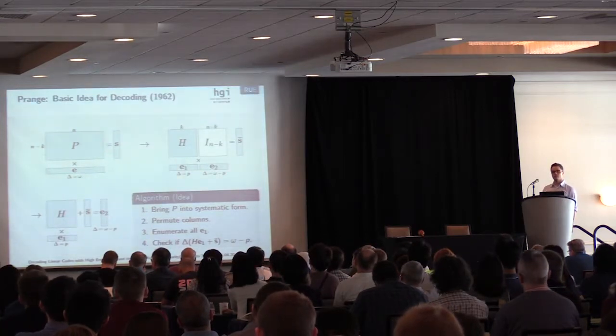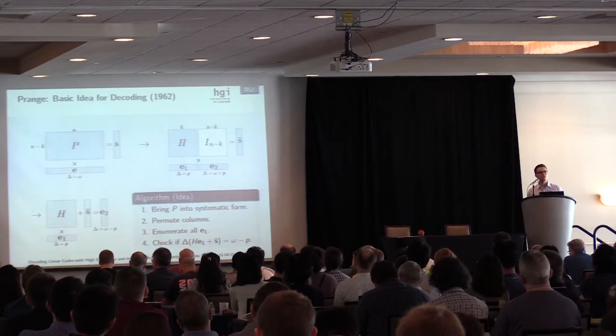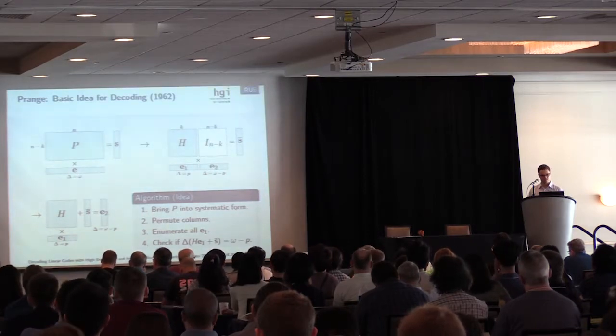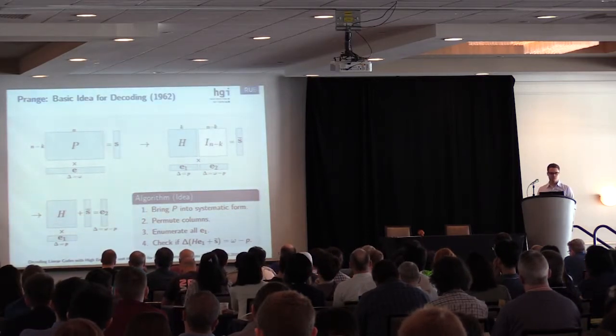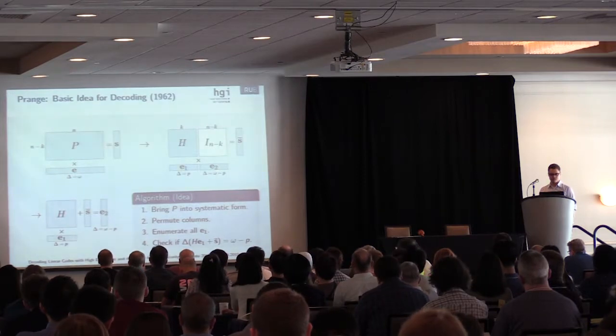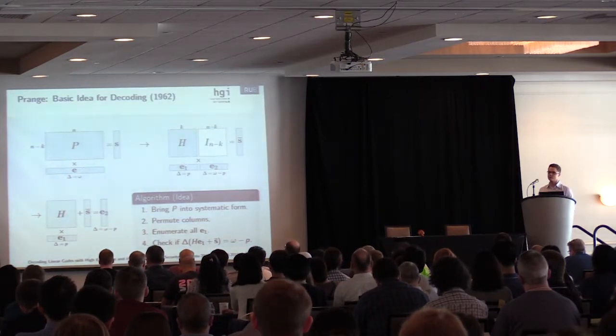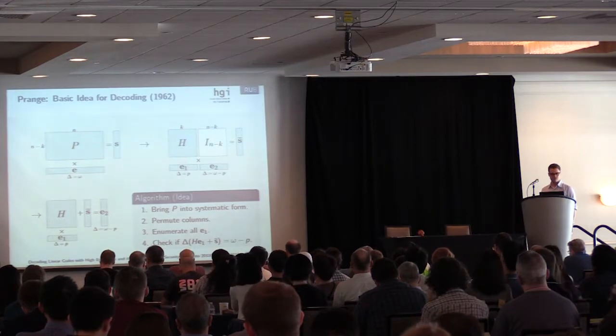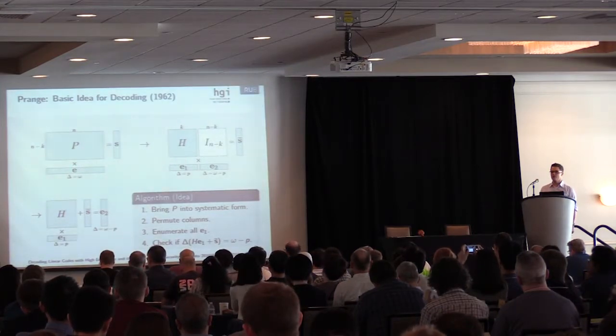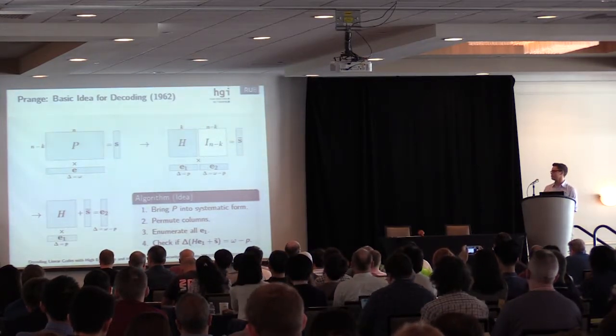As the third step, we enumerate all vectors e1, so all possible vectors of length k and weight p. For all those vectors, we simply check if H e1 plus S has Hamming weight omega minus p. If we didn't find a solution, then we have to retry.